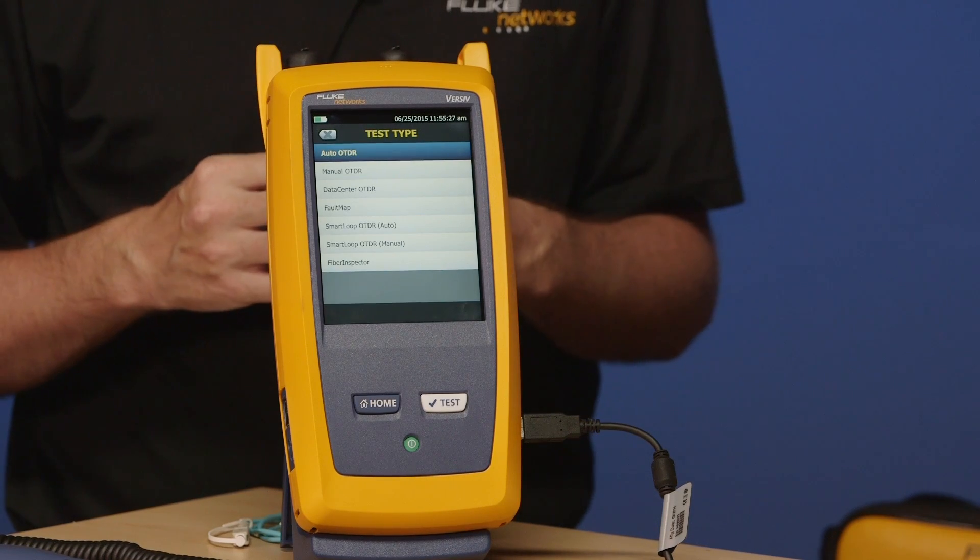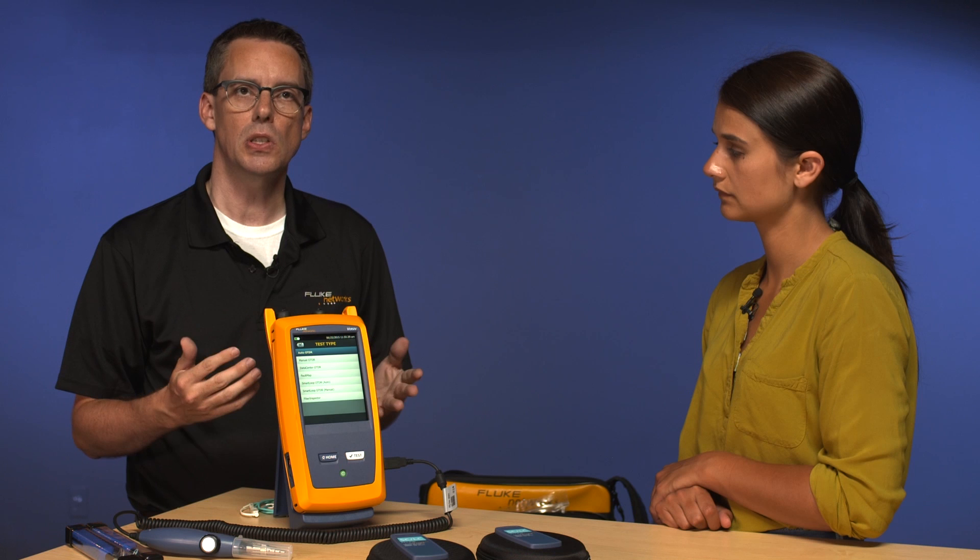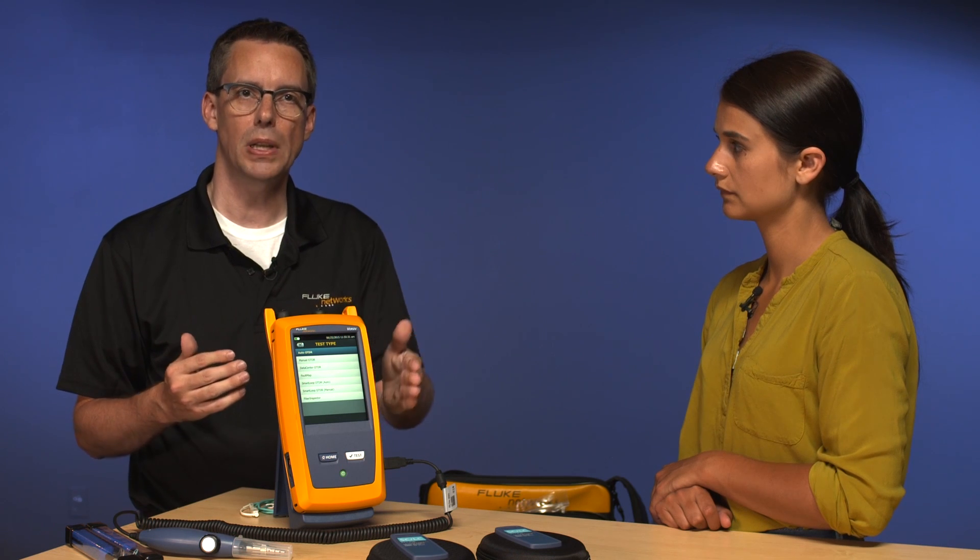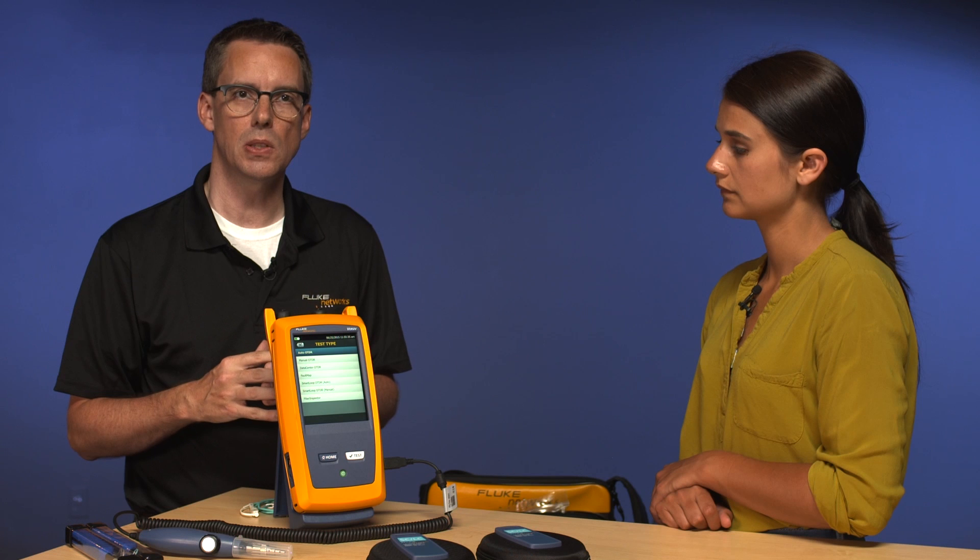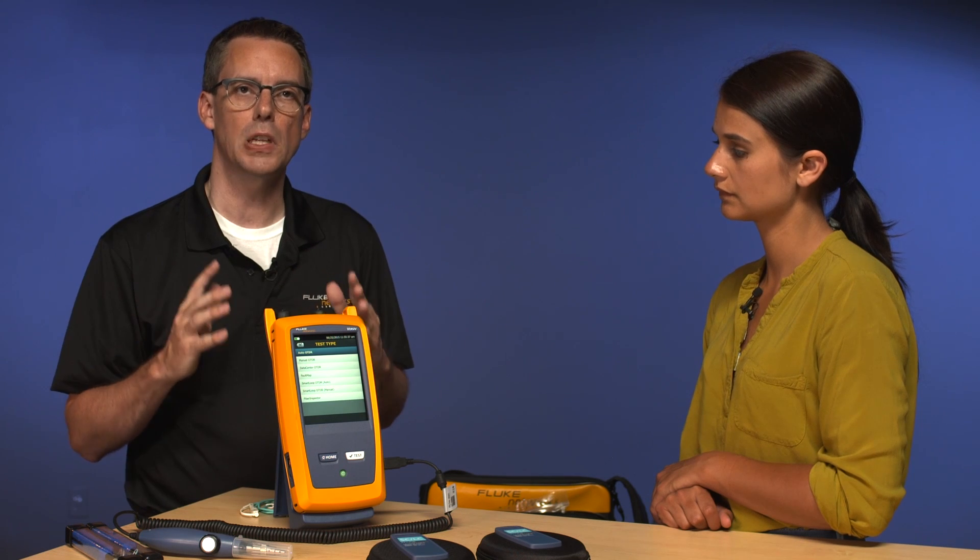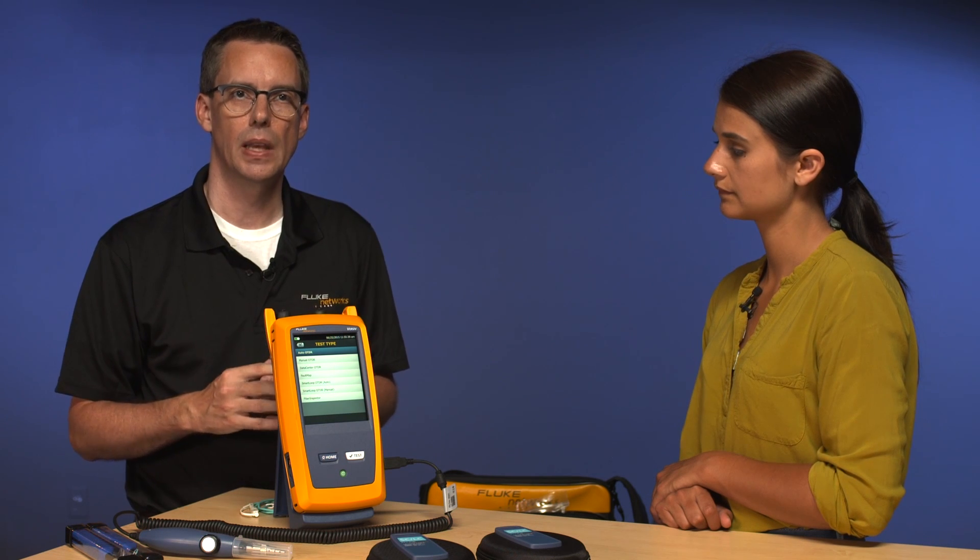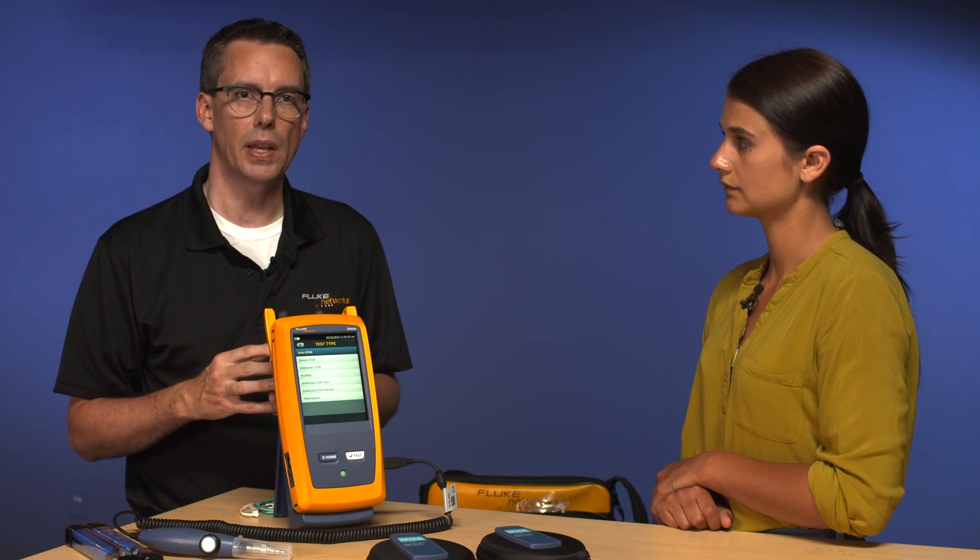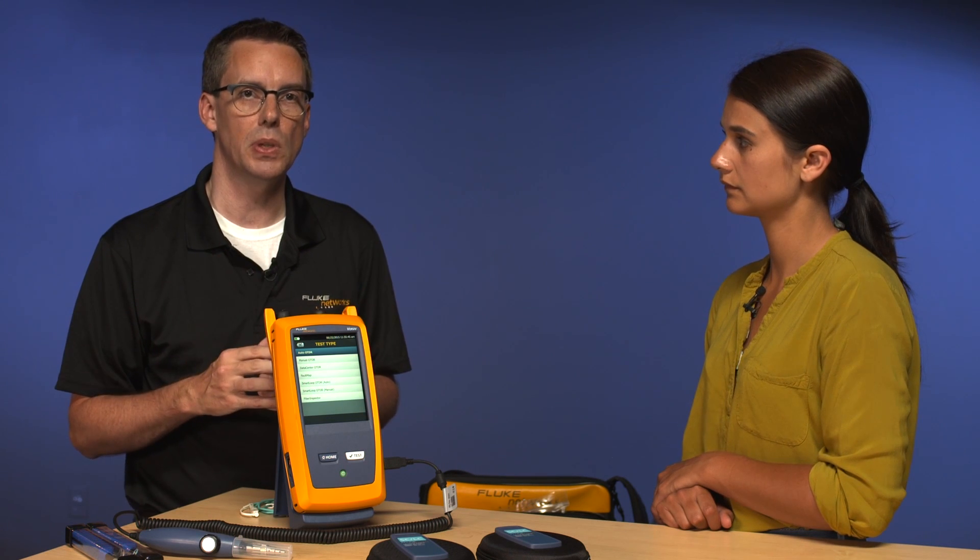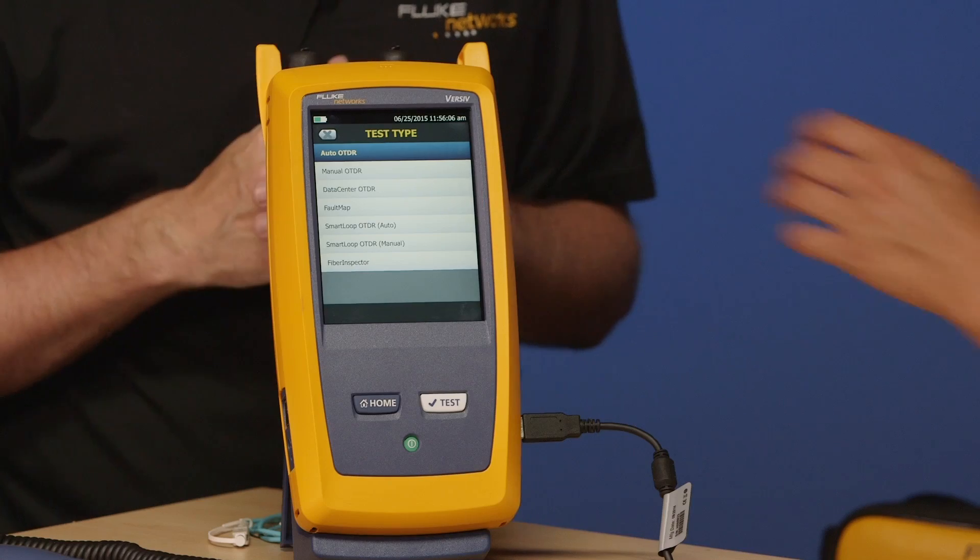You'll also see Data Center OTDR. If you're doing certification of cabling systems, please don't use this one. This one is specifically for troubleshooting in data centers, where we want to try and get the very best dead zone possible. As a result, if you use Data Center mode, you only get one wavelength. You need both wavelengths if you're doing certification. So go ahead and tap Auto OTDR.